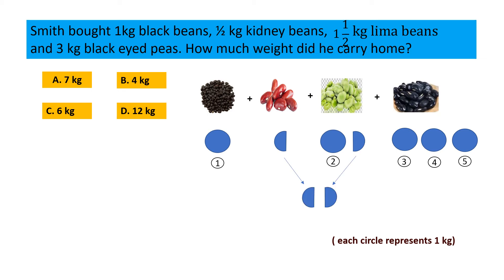So in total there are 6 circles, which means 6 kg. The correct option is C, that is 6 kg.